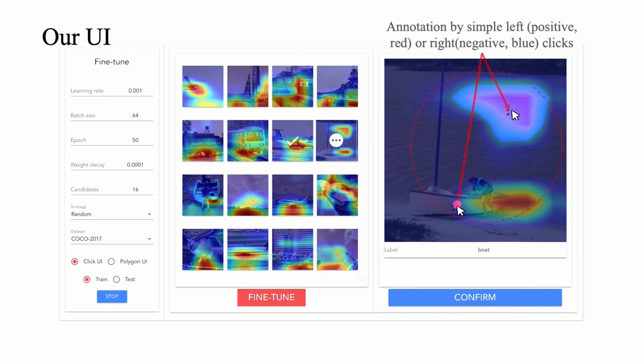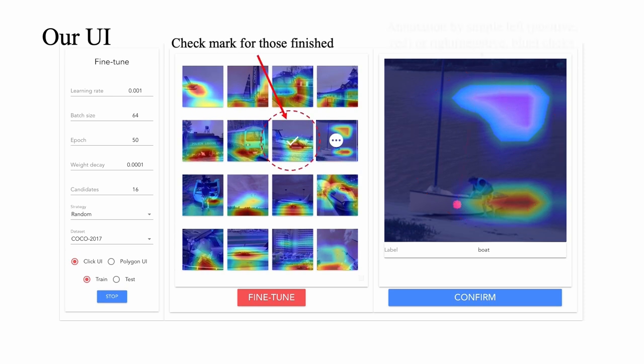Here, left click to select the correct attention area and right click to eliminate the wrong area. Completed candidates are then marked with a check mark.